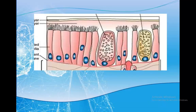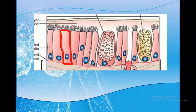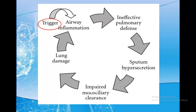Taking a closer look, you'll find the goblet and serous cells which also secrete mucus and serous fluid. On the epithelial cells you can see hair-like projections called cilia, which is one of the defensive mechanisms in the respiratory system. Cilia moves foreign bodies, dust and particles trapped by the mucus back up the airways to be swallowed by the oesophagus.